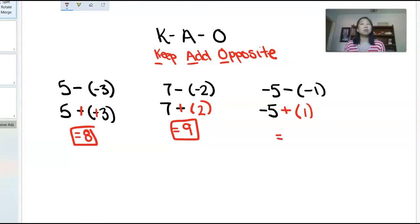So what is negative 5 plus 1? Well, they're different signs. You're going to actually subtract them, which is 4. And you're going to take the sign of the bigger absolute value. So your answer is going to be negative 4.